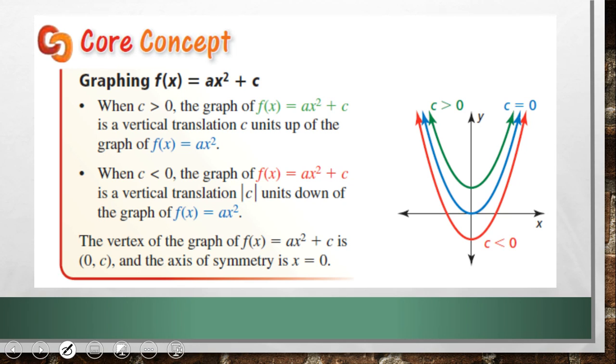In essence, your c is going to, if we don't have a b term, become your y-intercept. But it depends what's going to happen when we have a b term. But for now, c moves your graph up and down. It's a vertical translation. When you see the term vertical translation, that means it's moving the graph up or down.